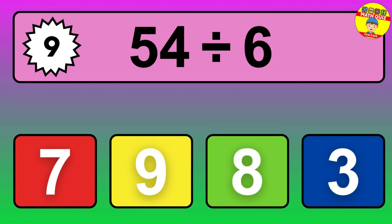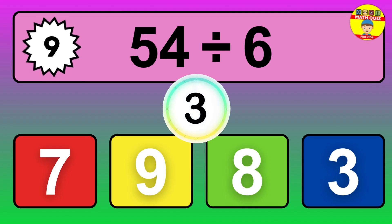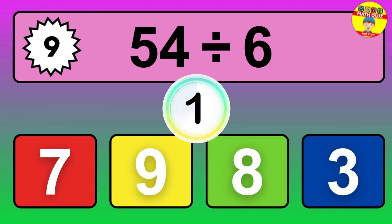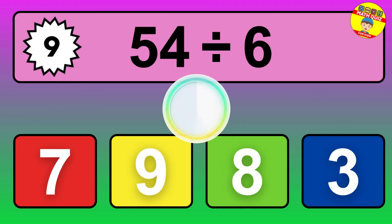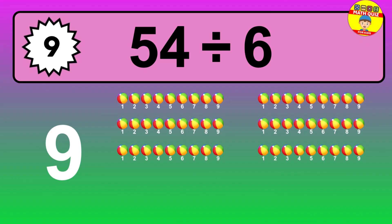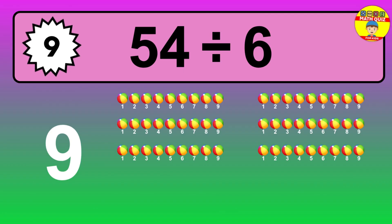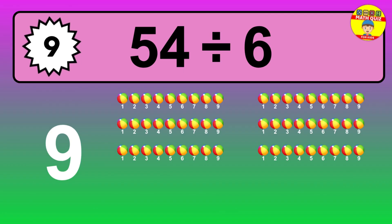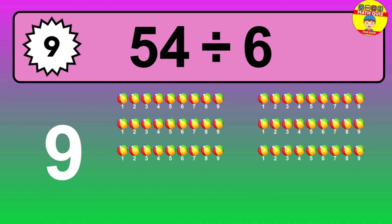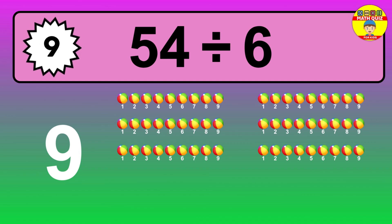54 divided by 6 — time to think. Let's go to the solution. Divide the number 54 by 6. Each group contains 6 units, so dividing 54 by 6 results in 9 equal groups. Thus, the result is 54 divided by 6 equals 9.